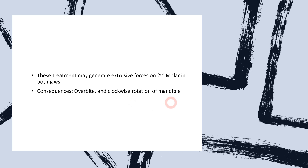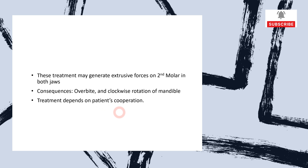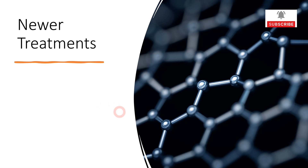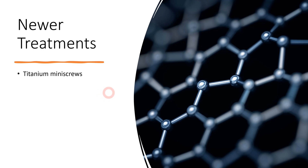Lastly, talking about newer treatments being introduced and used more frequently compared to the old gold standard treatments — these new treatments are currently being studied and include the use of titanium micro screws and bite planes. In this video we talked about everything you need to know about scissor bite: what scissor bite actually is, its etiology, characteristics, features, and lastly its management. I hope this video was useful. If you liked it, please like, share, subscribe, and press the bell icon. Thank you for watching. See you next time.